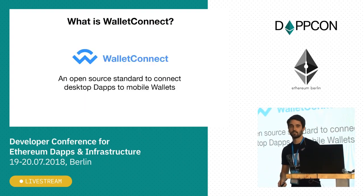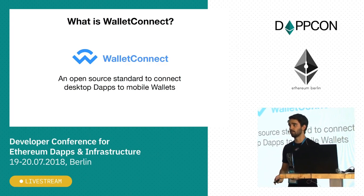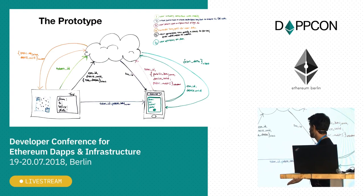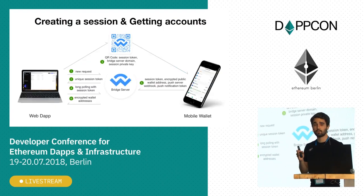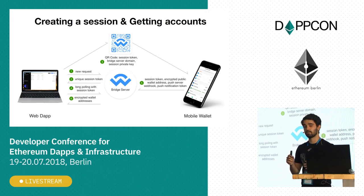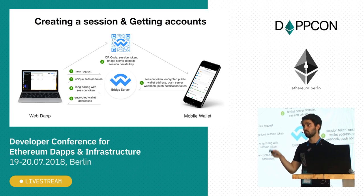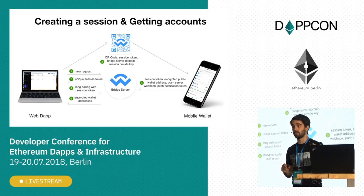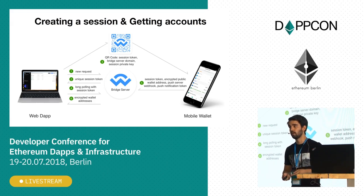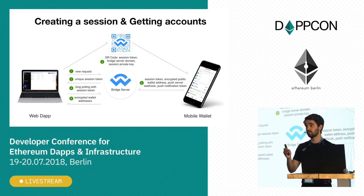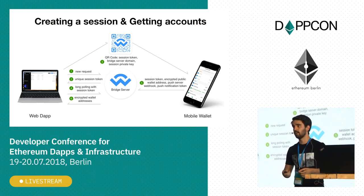It would be ideal to not depend on that system and have one wallet you feel is truly your own. So, what is WalletConnect? WalletConnect is an open-source standard to connect desktop apps to mobile wallets. The first prototype's core goal: get accounts from your mobile wallet to the web page, then sign transactions securely on your phone. You create a session by displaying a QR code, which encodes the session token, the bridge server address, and an encryption key for securing all data exchanged between the two devices.